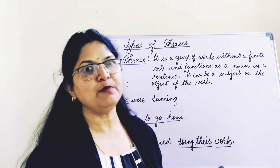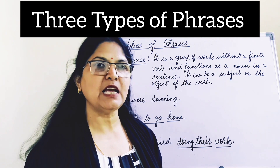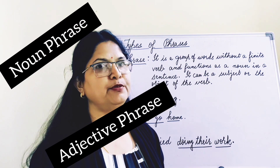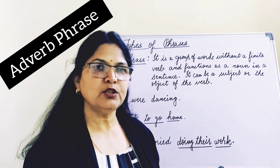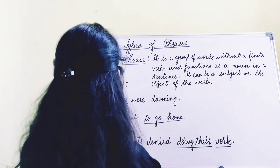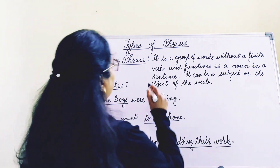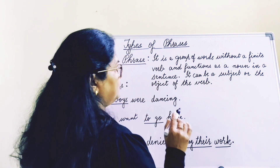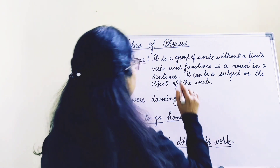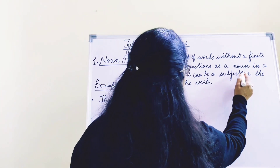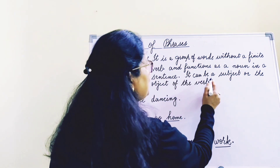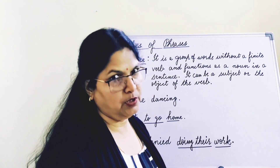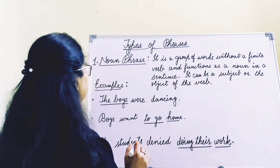Now let's look into the types of phrases. There are mainly three types of phrases: noun phrases, adjective phrases, and adverb phrases. Let's look into the noun phrase. A noun phrase is a group of words without a finite verb, and it functions as a noun in a sentence. It can be a subject or the object of the verb. Let's see with a couple of examples.